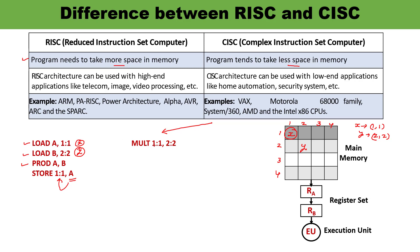In the case of CISC, it has the capability to perform complex instructions quickly. It directly multiplies the content of x with y — x is available at one location and y at another. It multiplies x and y, and whatever the result is, it is directly stored into location x. This is how you understand more instructions needing more memory versus less memory.